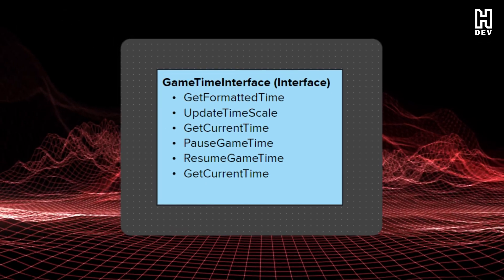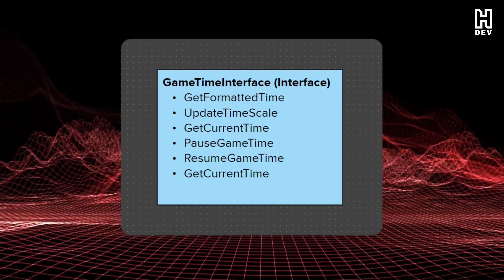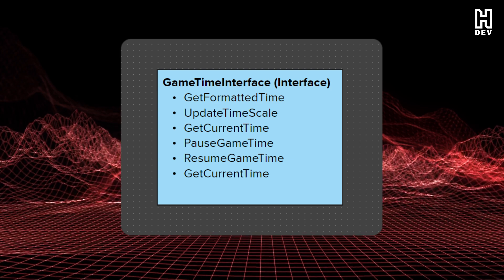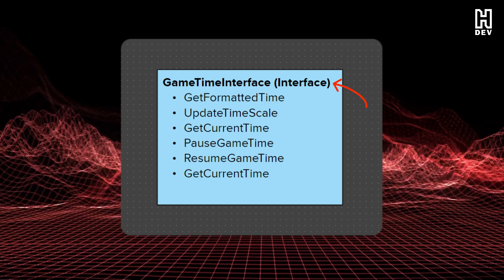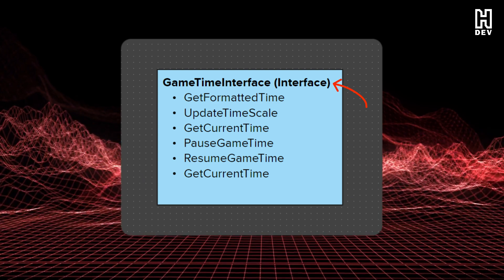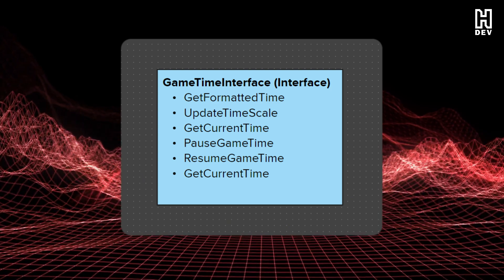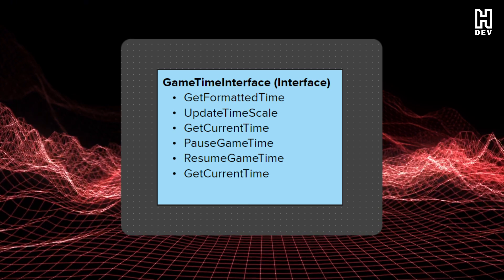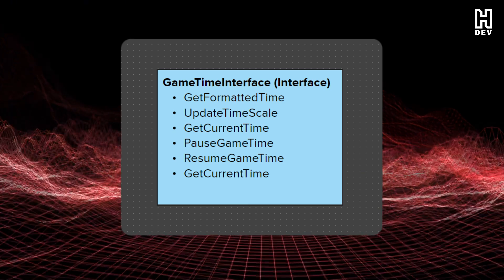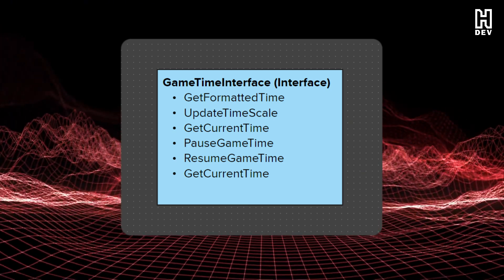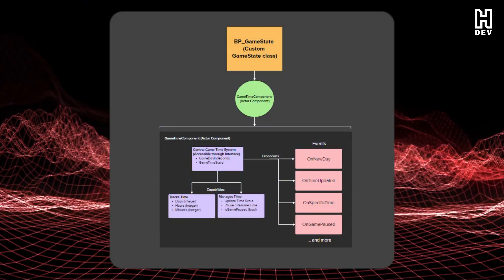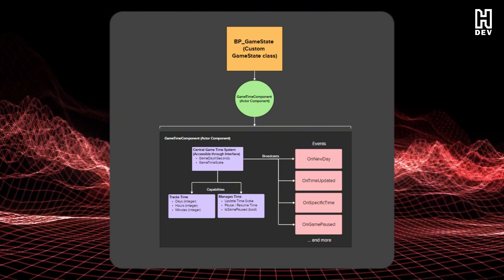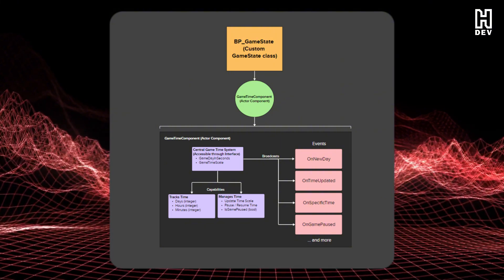Second, to limit the amount of casting and help decouple our game time system, we're going to create an interface that will allow our actors and other objects to get any time data they need. These are some functions we're going to implement, but you can definitely add more as needed. So we have our design to create our central game time system — let's jump into the editor and start building.